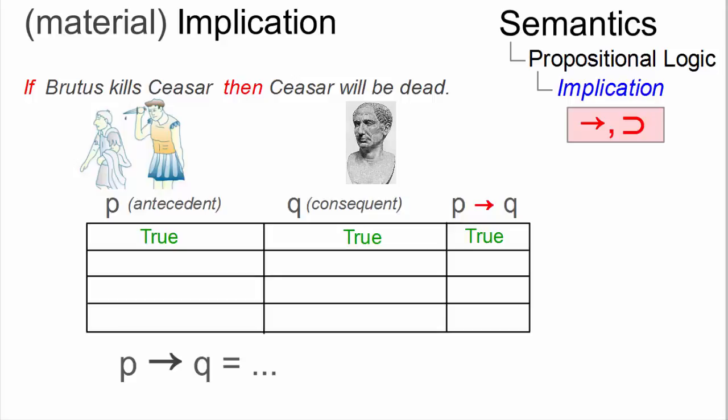This implication is certainly true if both antecedent P and consequent Q are true. But it is also true if the antecedent P is false, that is, Brutus did not kill Caesar, since now the consequent Q cannot be invalidated. Caesar could still be dead.